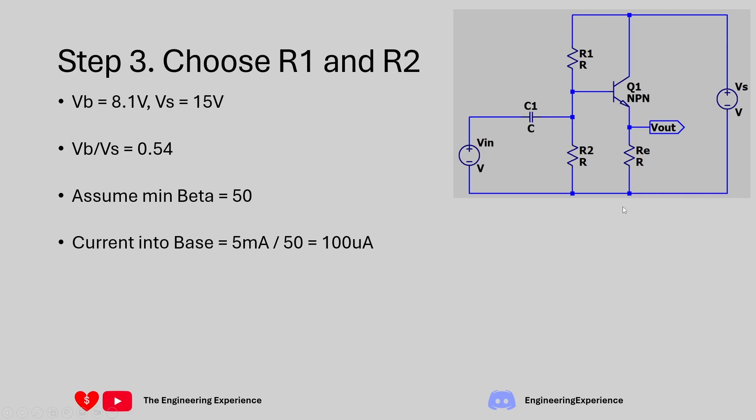We know that we've got 15 volts coming in here from the power supply and we need at least 1 milliamp going down this path. Then we can calculate the total resistance of R1 and R2 by doing 15 volts divided by 1 milliamp which gives us a total resistance of 15 kilo ohms.